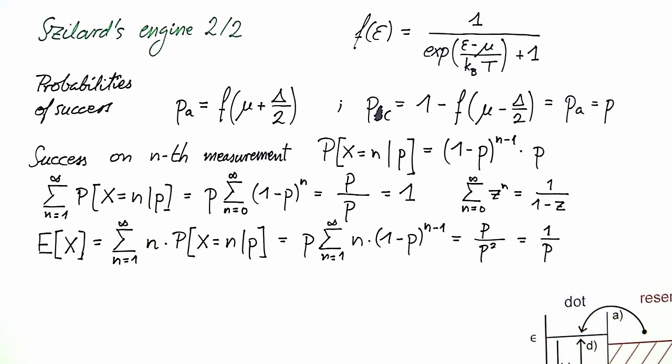For example, if you throw a die and you want to obtain a 6, on average you have to throw 6 times because the probability of success is 1 over 6.